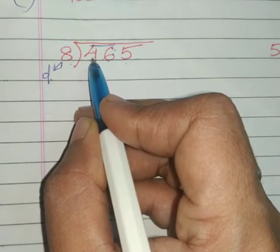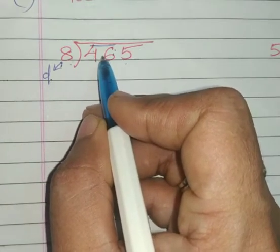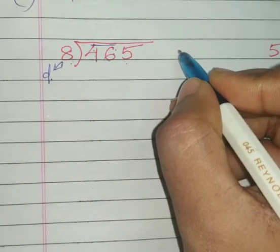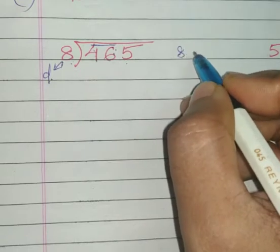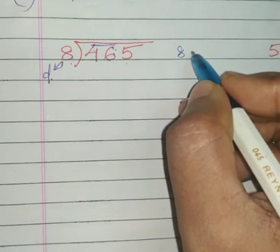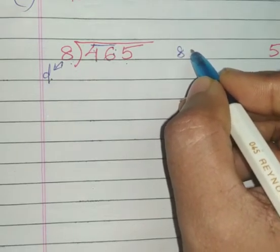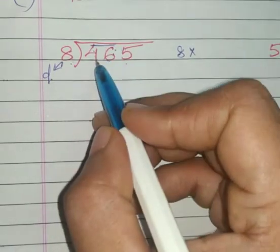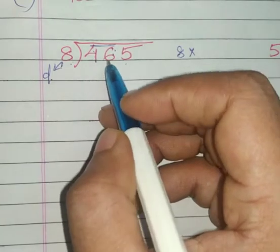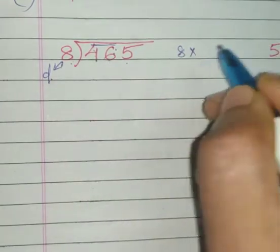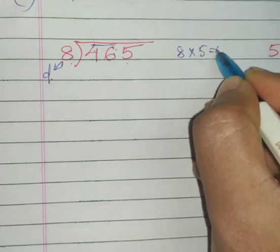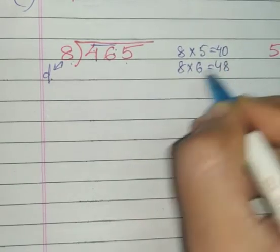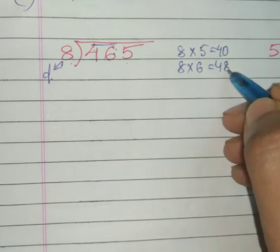8 sixes are 48, 8 fives are... yes, come on try. Or else you can go for the 8 table: 8 ones are 8, 8 twos are 16, like that also you can think. Now I'll think 46, so where am I getting the nearer number in the 8 table?